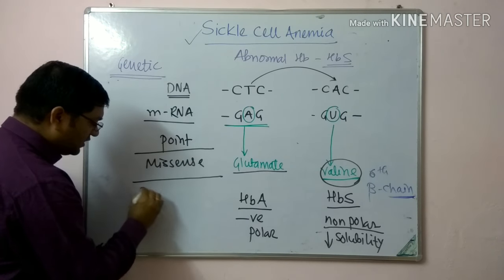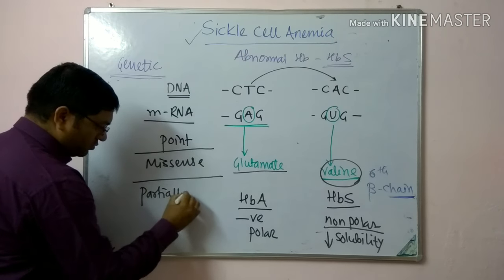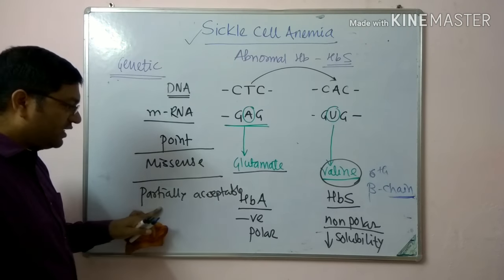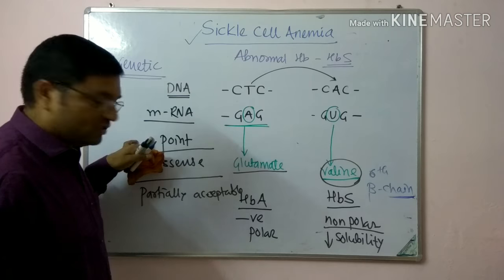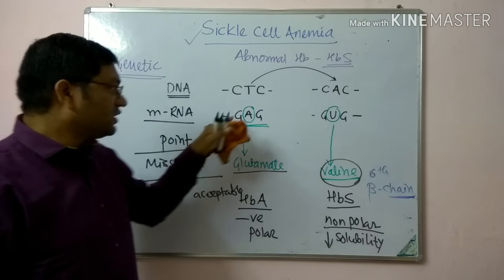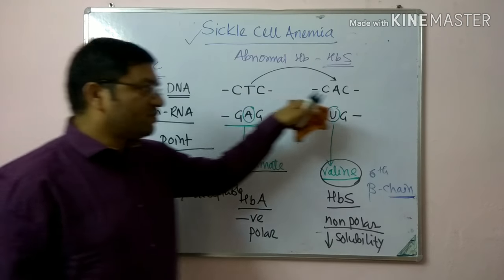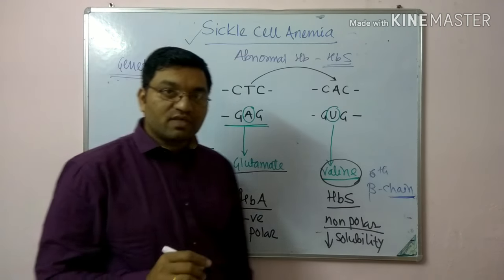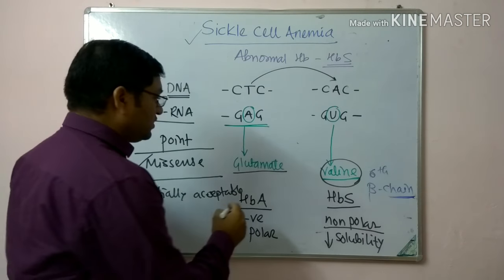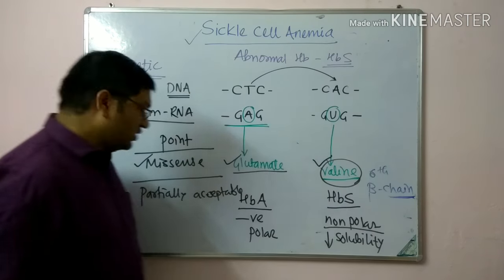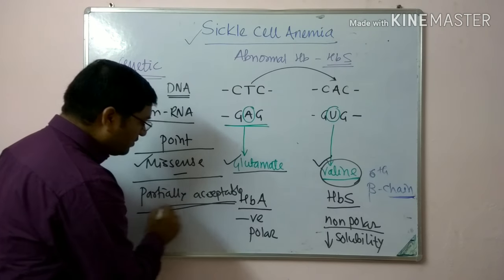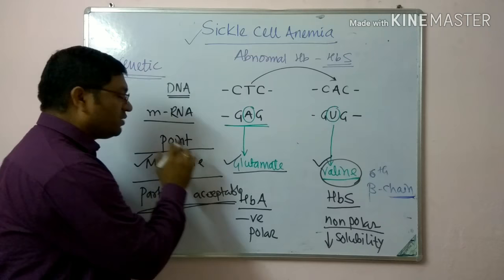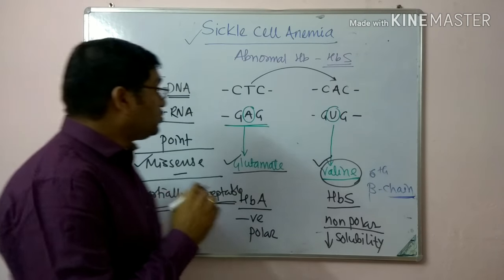It is a partially acceptable missense point mutation. This means there is substitution of a single base at the DNA level — thymine is replaced by adenine. Missense means the change in base sequence results in a change in amino acid, here glutamate is replaced by valine. Partially acceptable means it is compatible with life.